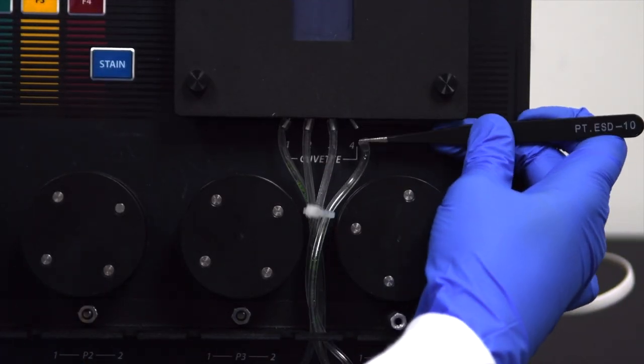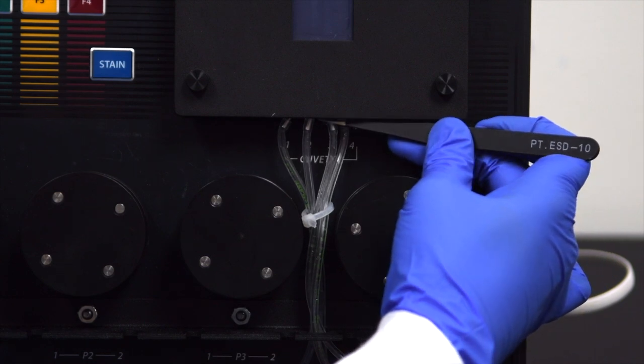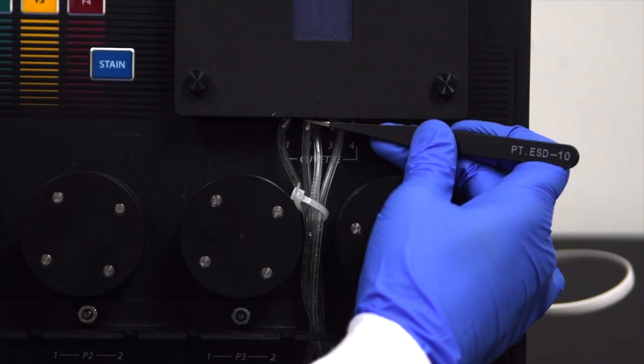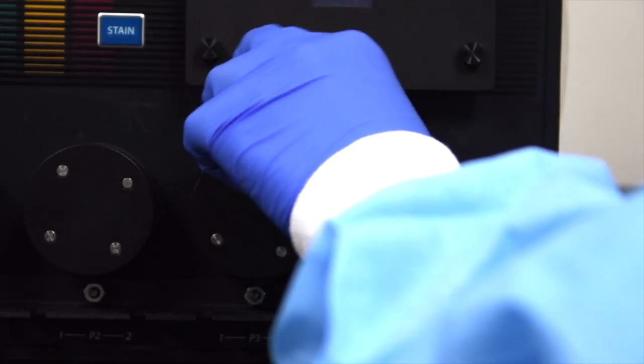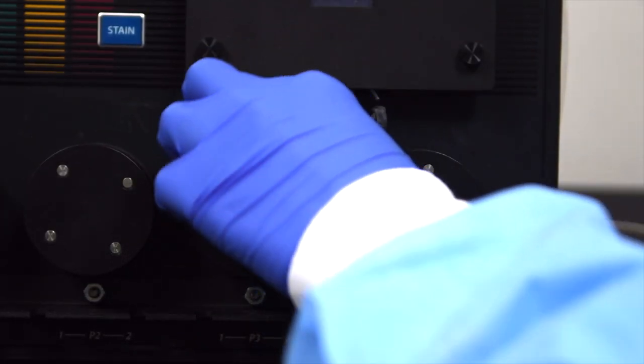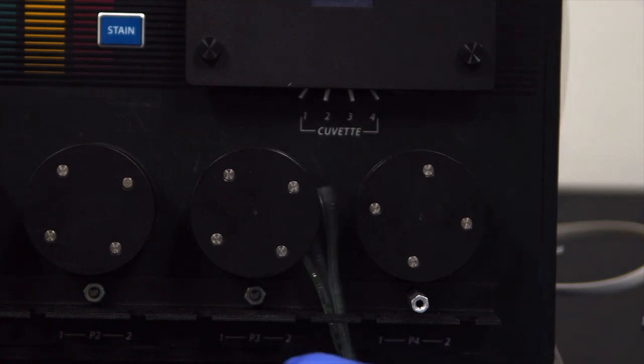Using a hemostat or forceps, pull the clear cannula lines straight down from where they are connected to the base of the cuvette chamber. Cut the zip ties that hold the clear cannula lines in place, and completely remove the tube kit from the machine.